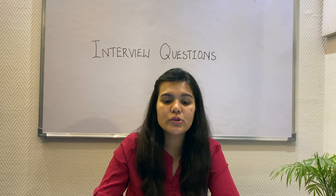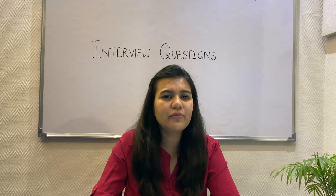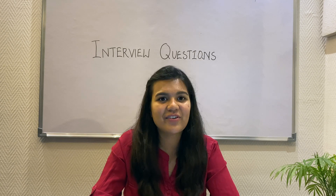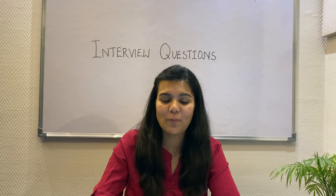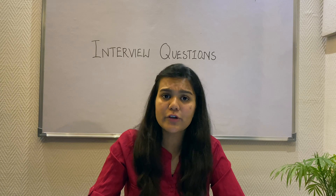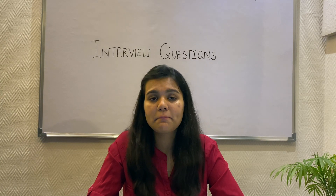Going on to the next question, which is very frequently asked and most people don't get it right: Why is multiple inheritance not supported by Java? Multiple inheritance is not supported in Java because it causes ambiguity in the code and makes it complex. It introduces a diamond ring problem.